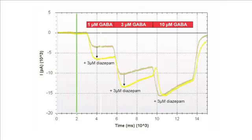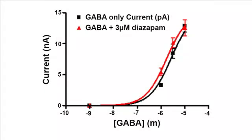The modulator-dependent shift in the apparent GABA affinity was then determined by cumulatively applying different GABA concentrations in the presence of a fixed concentration of the modulator — in this case, 3 micromolar diazepam. This type of experiment is enabled by the flow-through fluidic design available in the ion flux instruments.